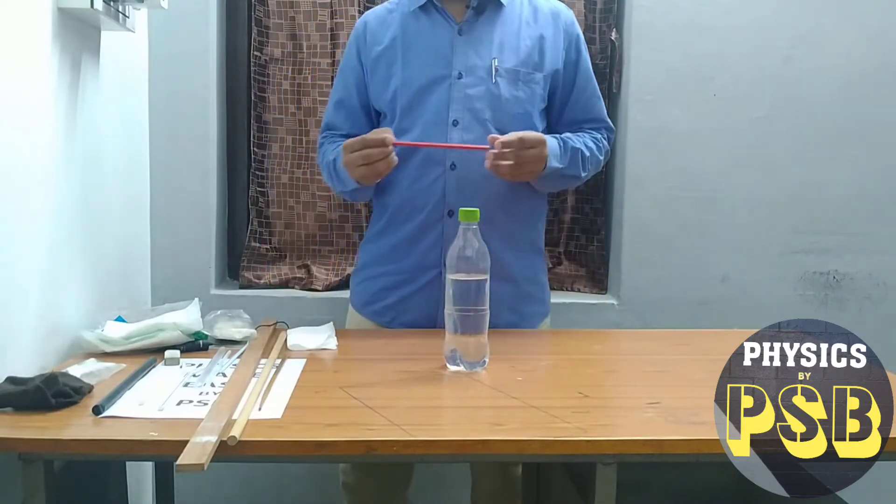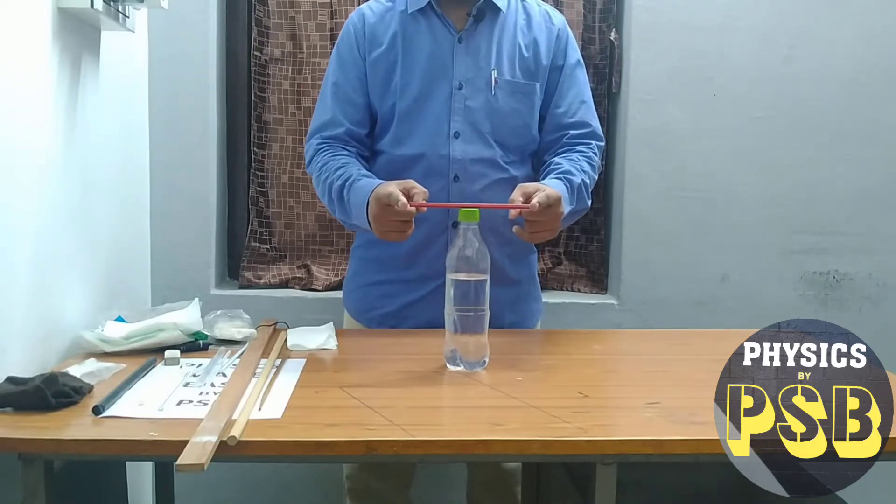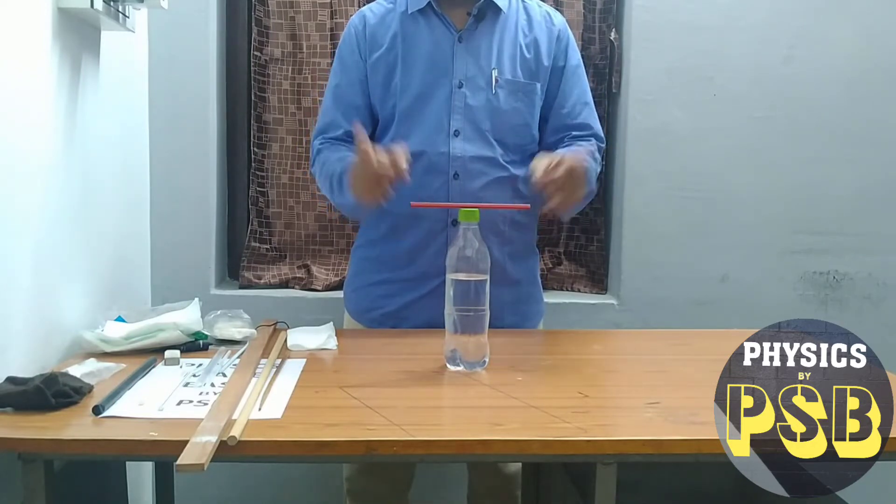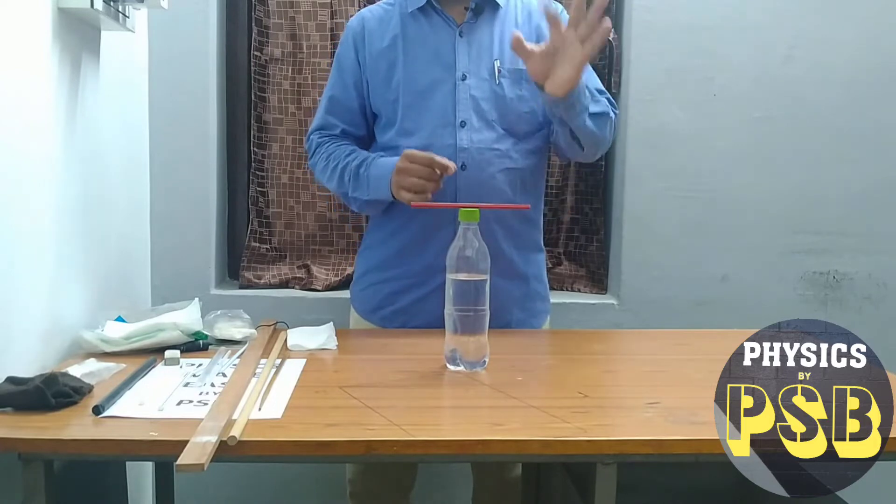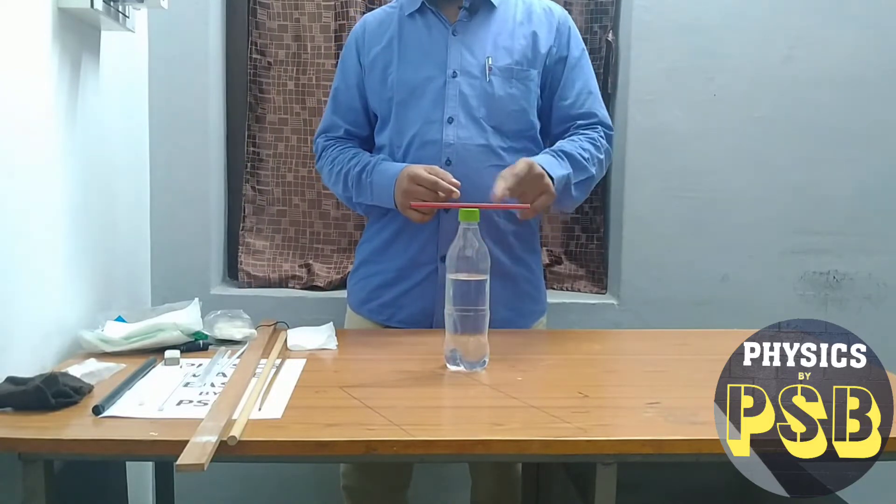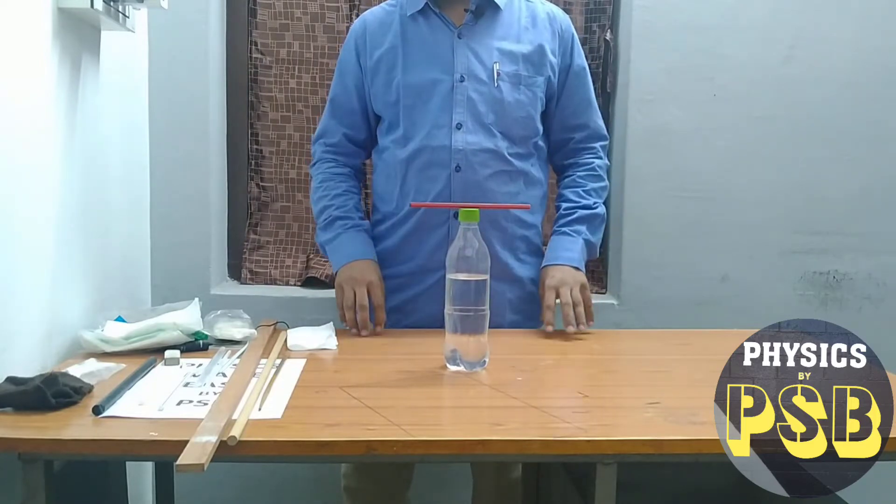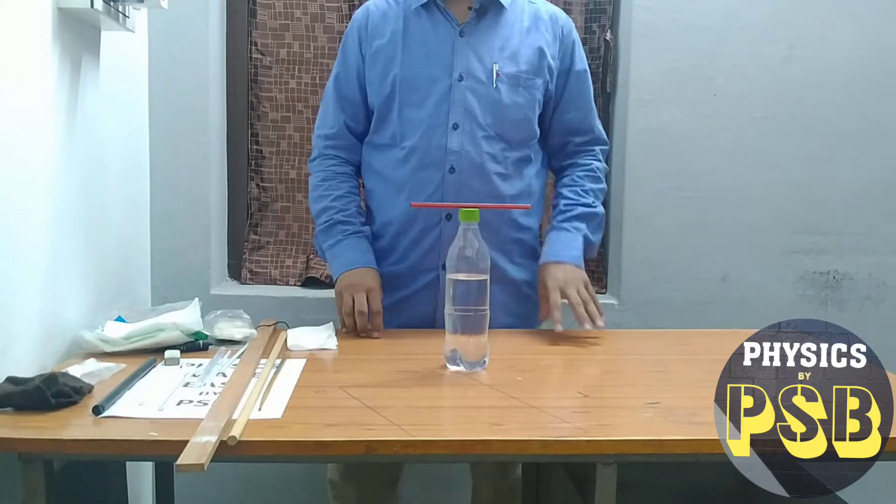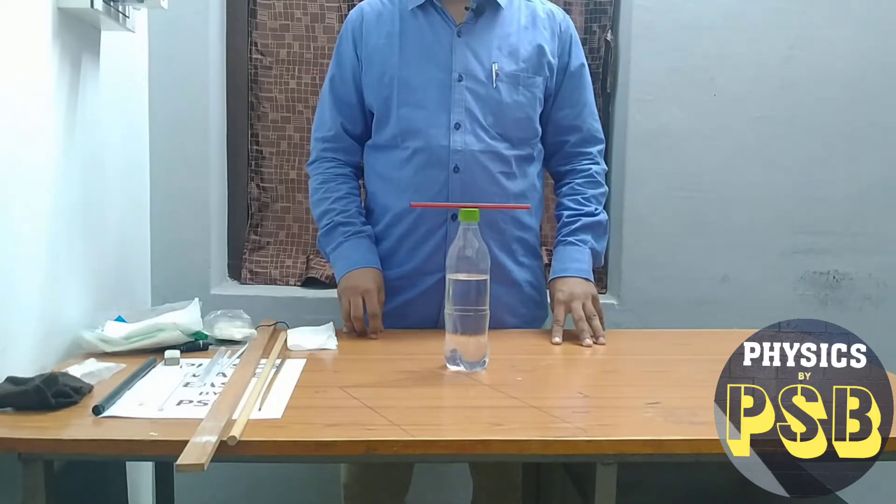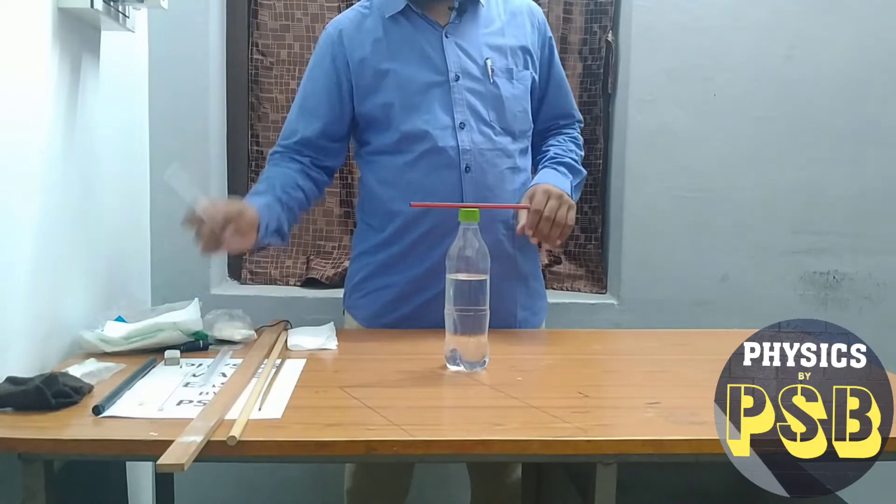Then I take one pencil and place it on the bottle this way. Then one simple question: is it possible to make this pencil move without touching it or without shaking the table or without blowing it? The answer is yes, we can do it.